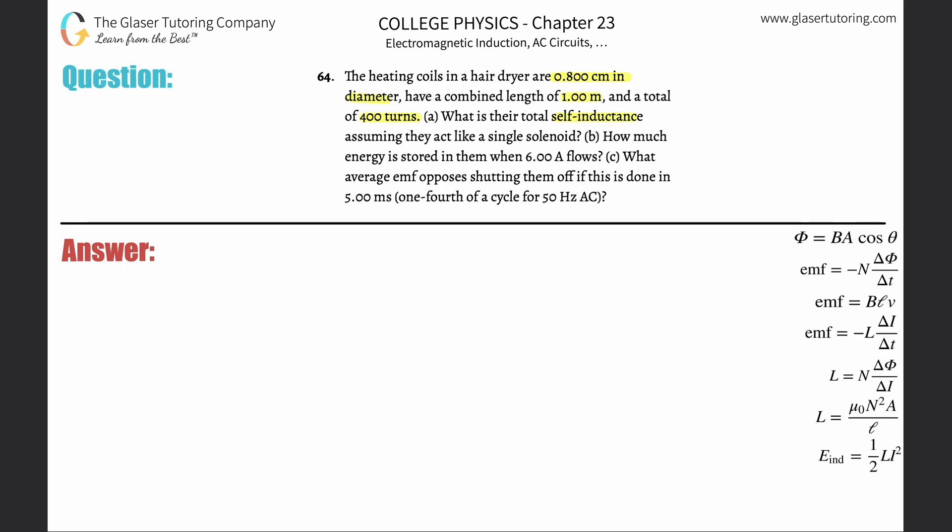All right, so we have a formula here that talks about the inductance of a solenoid. It is equal to the permeability of free space multiplied by the number of turns squared, multiplied by the cross-sectional area of that solenoid, divided by the length of the solenoid.